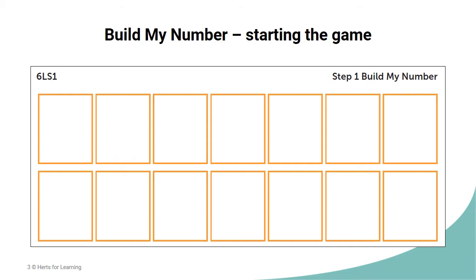To start the game, Player A writes down a number on their grid with up to 7 digits and then says one digit at a time out loud, starting from the lowest value column.